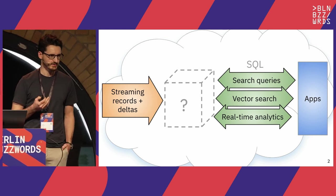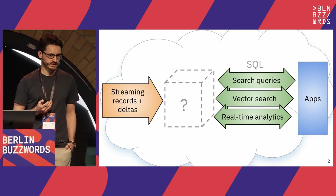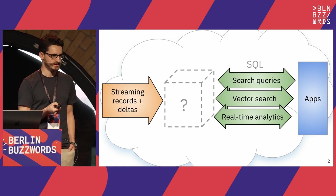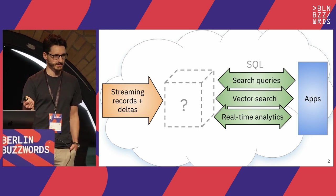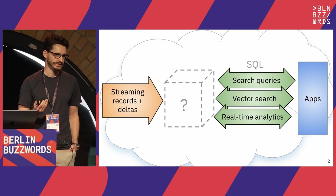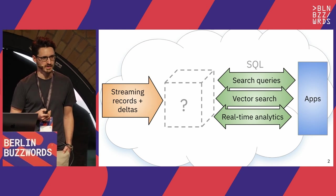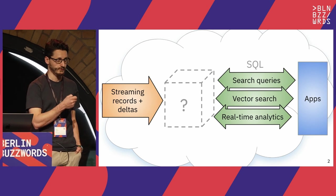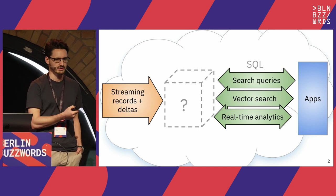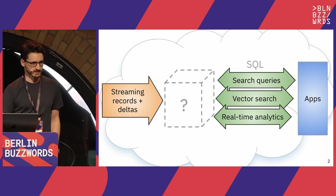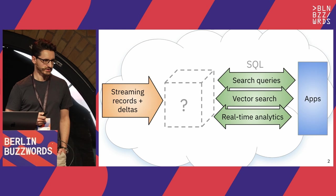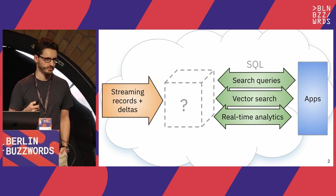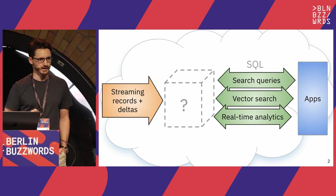There's one more constraint: we want to make this system real-time. That means the time from when the document enters our system to when it is reflected in queries — we call this ingest latency — is very low. The budget we have is sub-second. So it takes less than one second for a document to come into our pipeline and be reflected in the application.